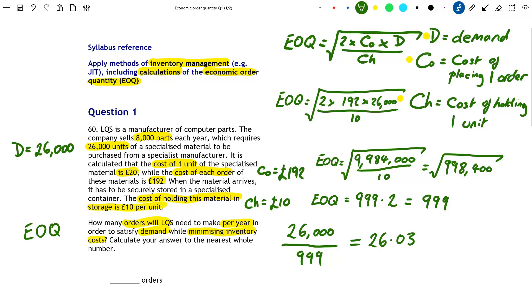Again rounded to two decimal places this time, just to show you the number. But again, we can't have 0.03 of an order, so we round it to the nearest whole number, which is 26. So in your exam, you would write here 26 orders.